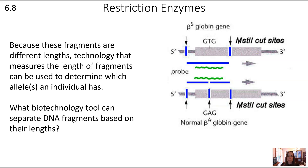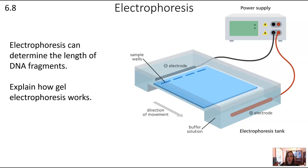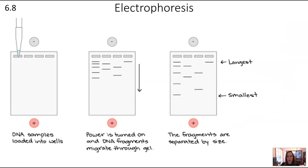Because these fragments are different lengths, technology that measures the length of fragments can be used to determine which allele an individual has. We're now going to combine the use of restriction enzymes — which were naturally evolved in bacteria — with another biotechnology tool that allows us to separate these fragments based on their lengths. That tool is electrophoresis, which can determine the length of DNA fragments.